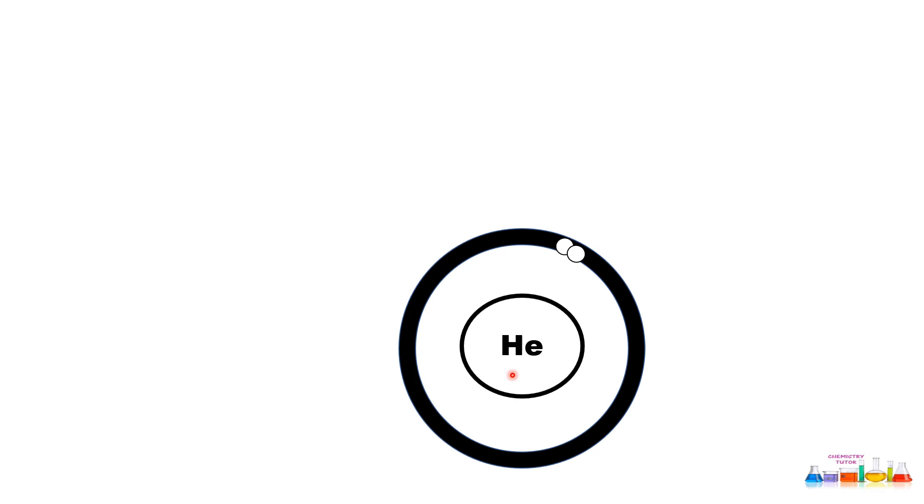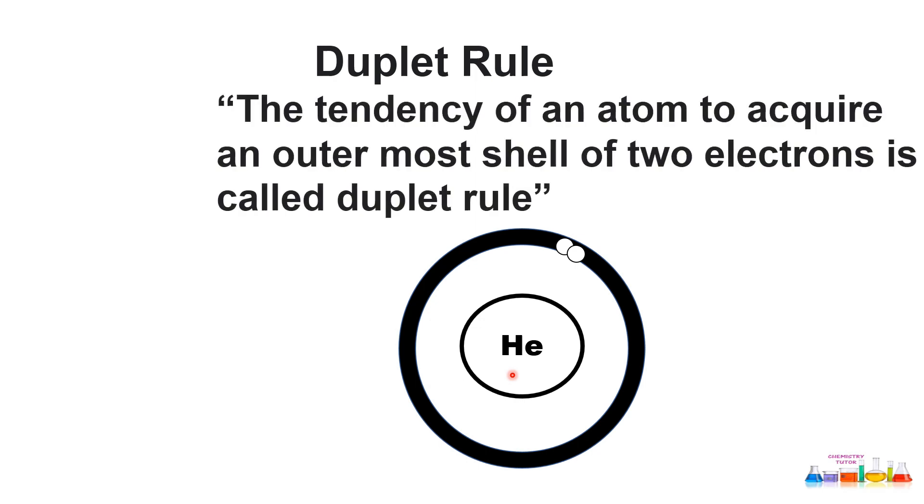in its valence shell and is also chemically inert. When we see the duplet rule by definition, it is the tendency of an atom to acquire an outermost shell of two electrons. This is called the duplet rule.